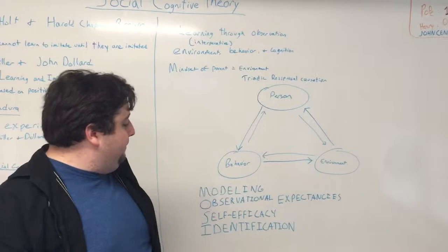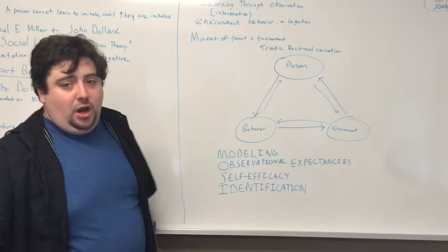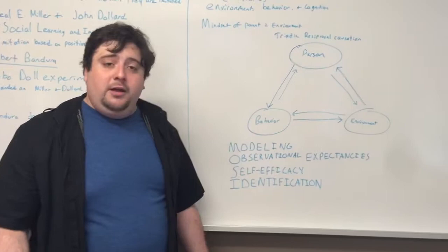There are four essential parts to social cognitive theory. The first is modeling, which is the situation upon which behavior will be imitated. So in the Bobo doll experiment mentioned earlier, when the adult beat up on the Bobo doll, this was the model for the child to imitate.